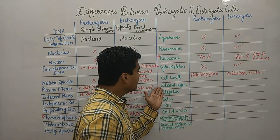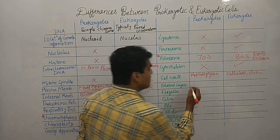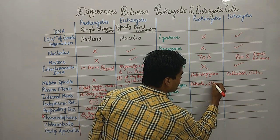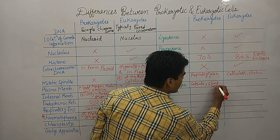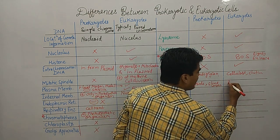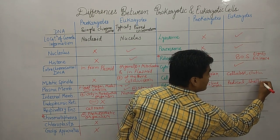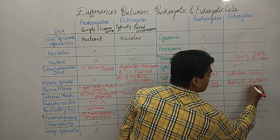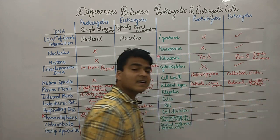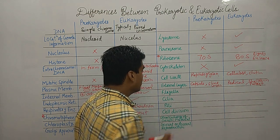Regarding the external layer: prokaryotes contain a capsule as well as a slime layer, whereas in eukaryotes there is a pellicle, and a shell is present in some protists.